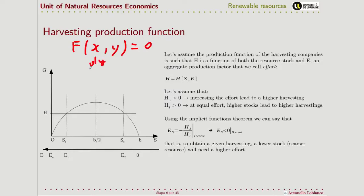as minus of the implicit functions for x over the derivative of the implicit function for y. So here we can apply the implicit functions, and because both these two are positive, so we end up that this one is negative, and it's pretty obvious.